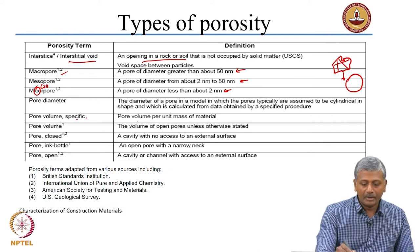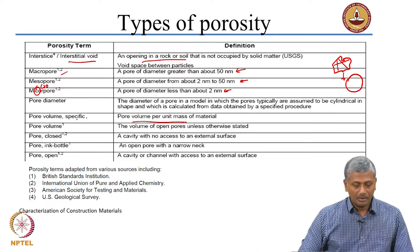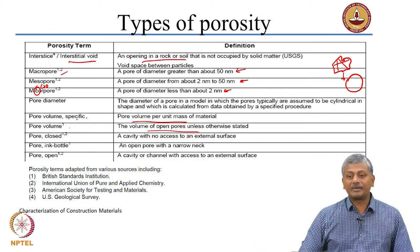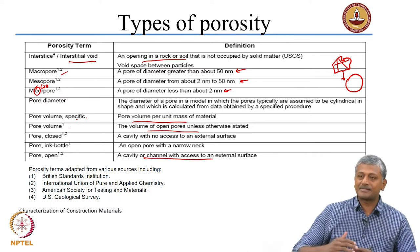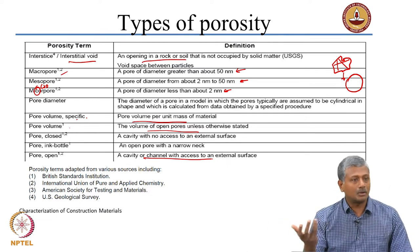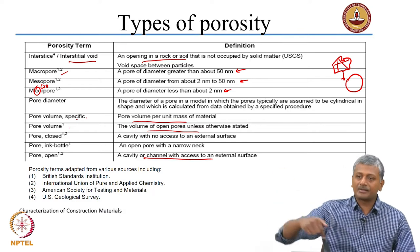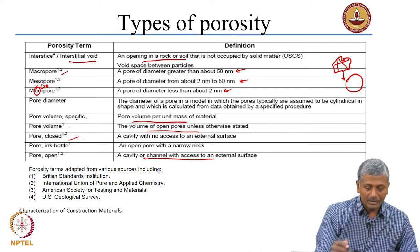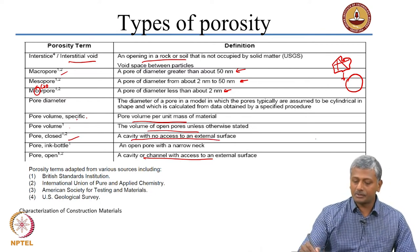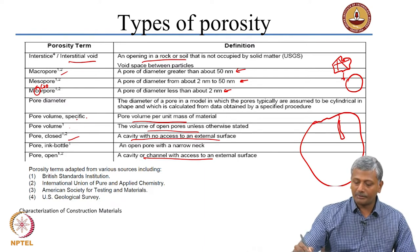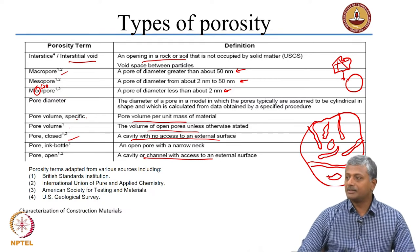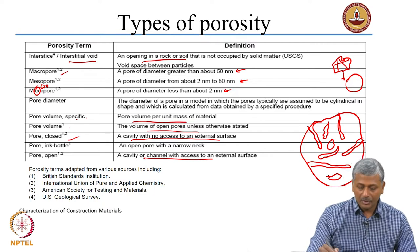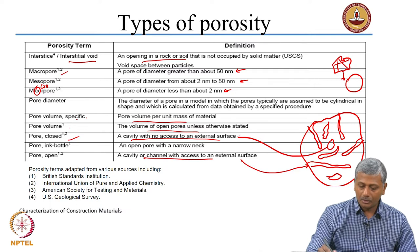Specific pore volume is pore volume per unit mass of the material, and overall pore volume refers to the volume of open pores unless otherwise stated. An open pore is a cavity or channel which has access to the external surface — these are pores open to moisture ingress from outside. A closed pore is a cavity with no access to the external surface; these are voids inside the volume of the solid that have no connection to the outside.